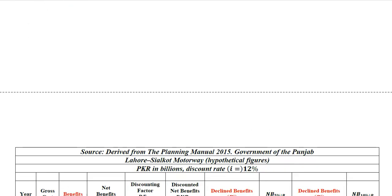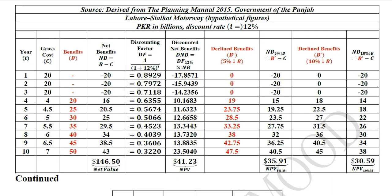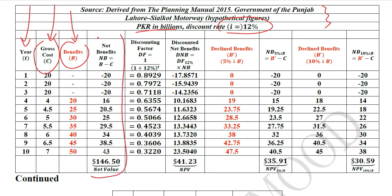Let's start doing this analysis. We are taking the same example used before — hypothetical data from the Lahore-Sialkot Motorway — with data in PKR billions and a discount rate of 12%. We have columns for years, gross benefits, benefits, gross cost, and a benefits column highlighted in red because we are going to experiment with it by declining the benefits by a certain percentage. The net benefits are calculated with the same old B's and C's, then we apply the discounting factor and find the NPV.